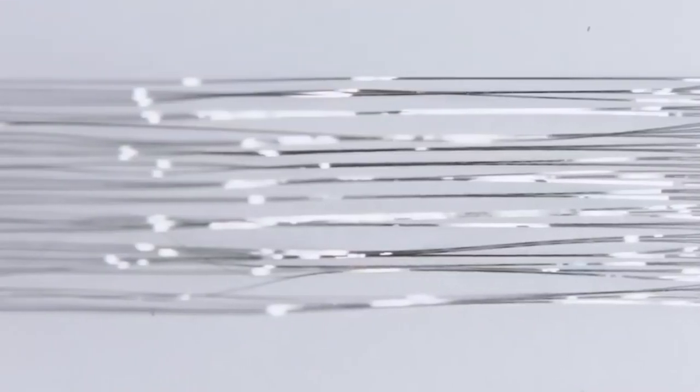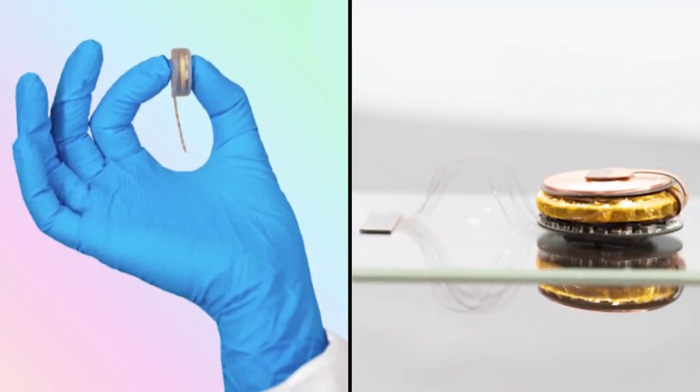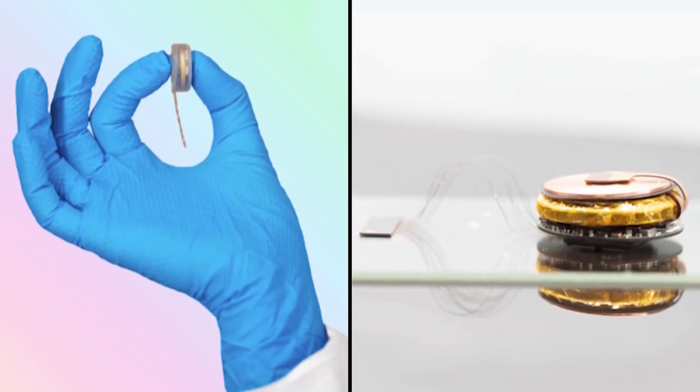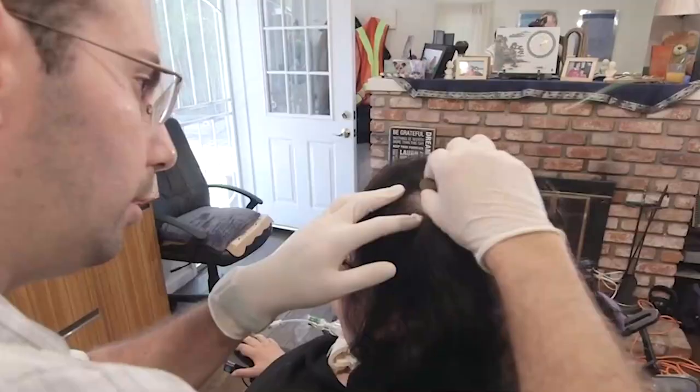It connects a thousand tiny strands from the link to specific neurons. These threads have a diameter of one-fourth of that of human hair. The chip uses Bluetooth to connect to an external computer for constant back-and-forth communication.